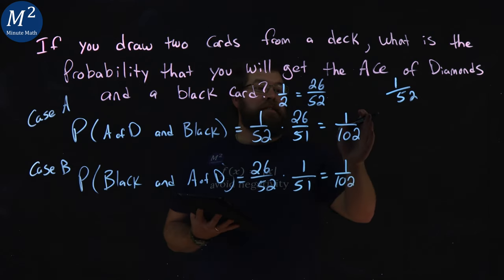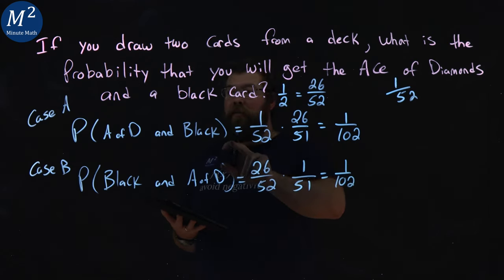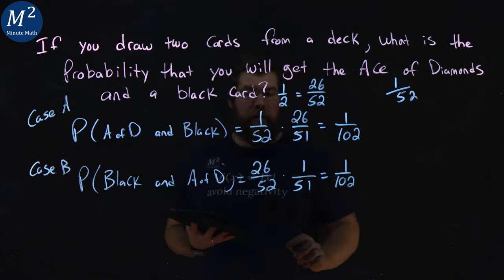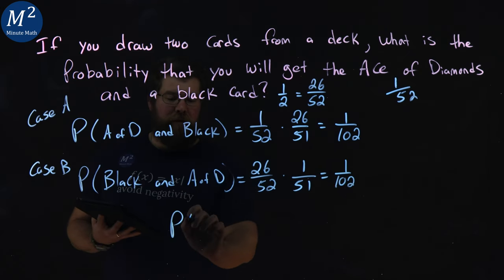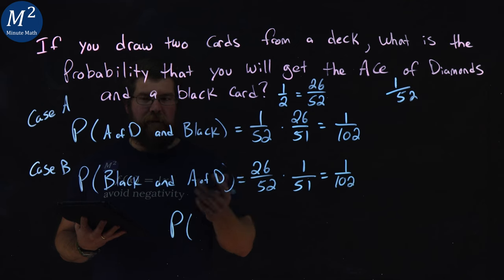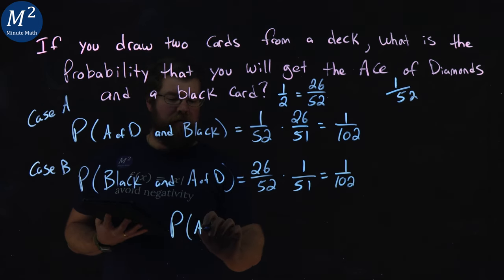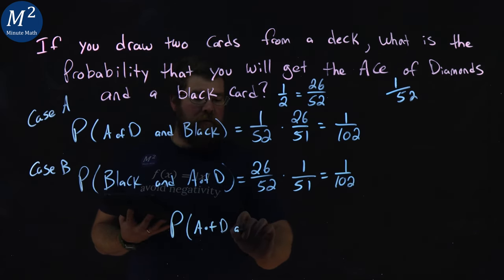So, what we want to do is combine the probability of each one of these. We add them together. So, the probability of case A and case B happening, two different options, of ace of diamonds and a black card or the other way around